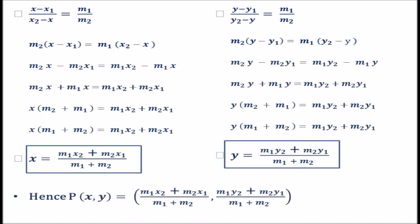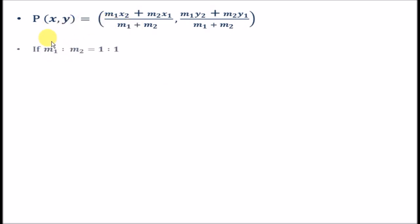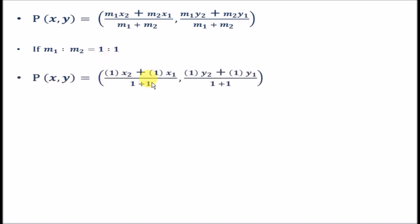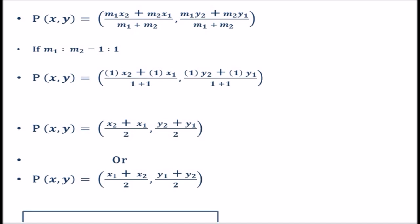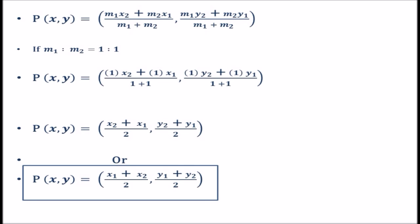Finally, let's look at a special case: when M1 to M2 equals 1 to 1, meaning the sections are equal. Substituting M1 = M2 = 1, the coordinates become P(X, Y) = ( (X2 + X1)/2, (Y2 + Y1)/2 ), or equivalently ( (X1 + X2)/2, (Y1 + Y2)/2 ). This is applicable only when the ratio M1 to M2 equals 1 to 1. Your task for the day is to work on the derivation of section formula on your own. Thank you and have a nice day.